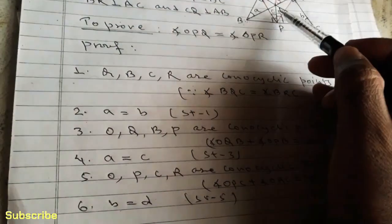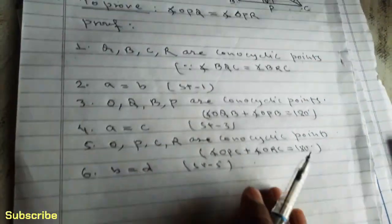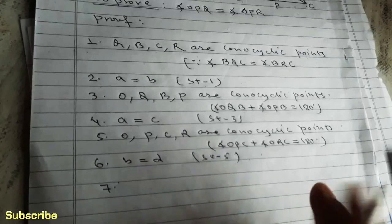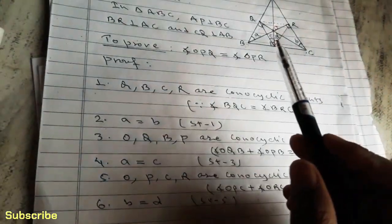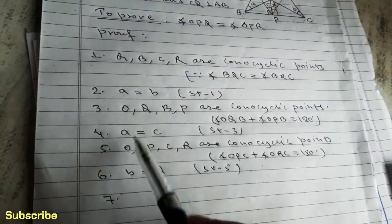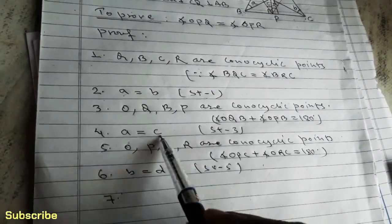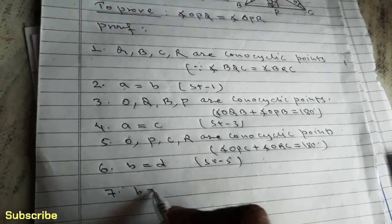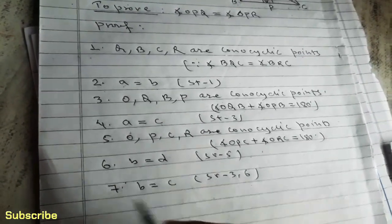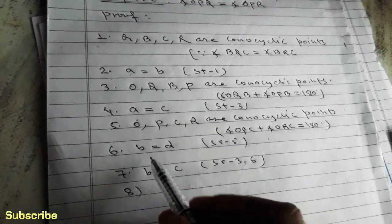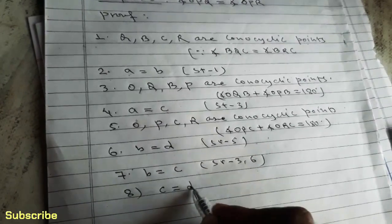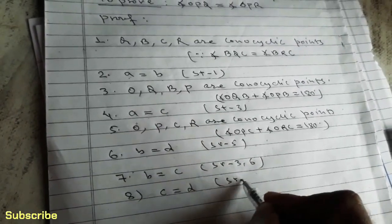Now we have almost got the proof of question number 24. When we combine statements two and four, we can write B equals C, from statements three and six. And if we combine statements six and seven, we can write C equals D. By combining these statements we have proved angle OPQ equals angle OPR.